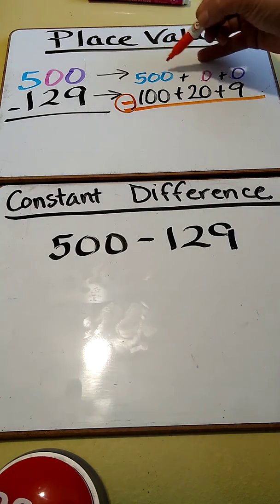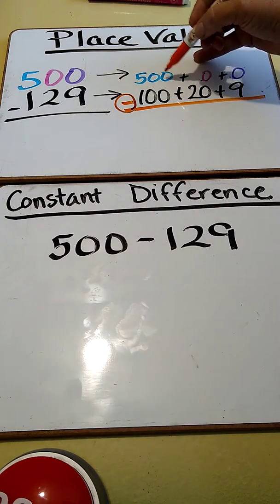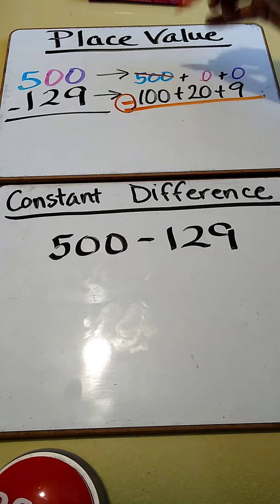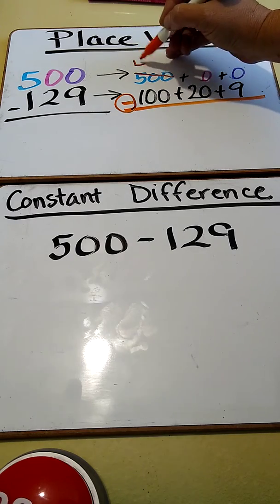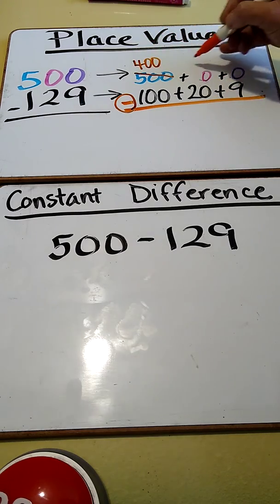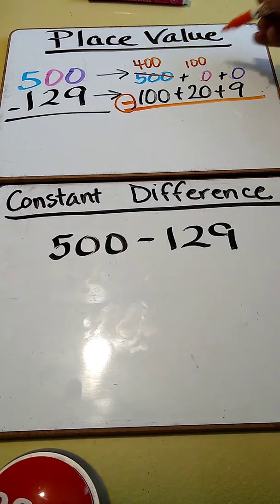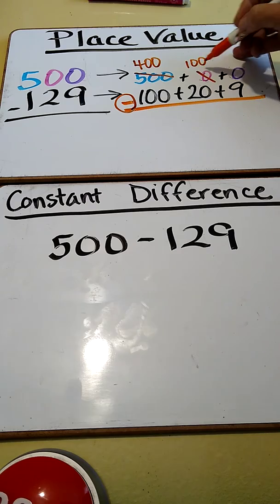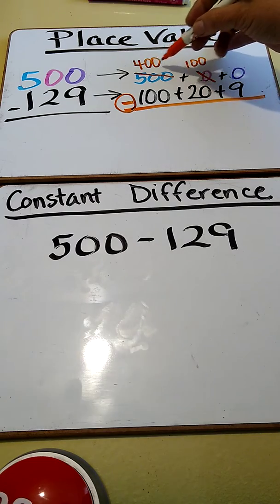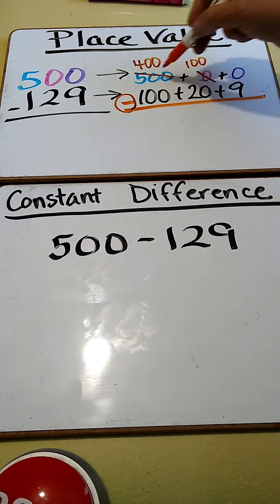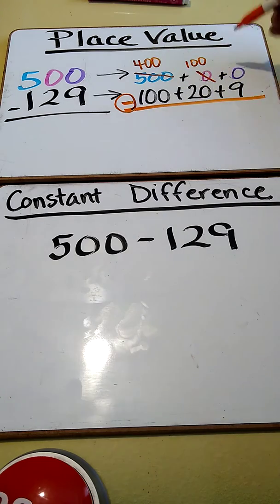So I'm going to regroup. When I'm taking something from my hundreds, I'm not just taking a 1, I'm taking a 100. So now this is going to be 400. This is 100. So now let's look. Still can't take anything from here. So I'm going to regroup again. I'm going to borrow here, and I'm going to regroup this 100, because remember,